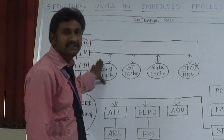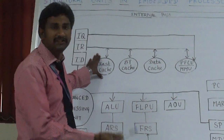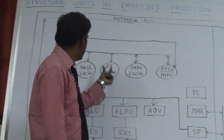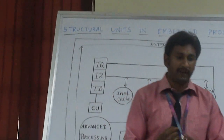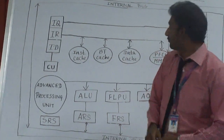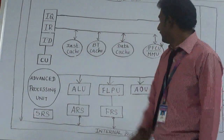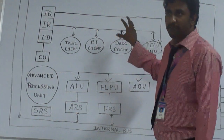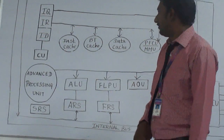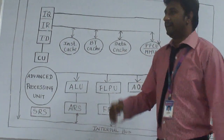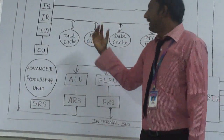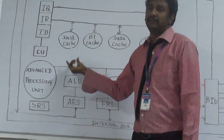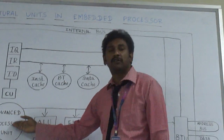The instruction cache pre-fetches instructions in advance and executes them in a first-in-first-out manner. The BD cache pre-fetches branch instructions — like branch, loop, call, or subroutines — that bunch of program instructions is pre-fetched and readily available in the BD cache. The data cache pre-fetches data in advance from external memory. The reason for all this is that the processor need not go to external memory every time to fetch data; instead it uses the readily available cache, so processing becomes much faster. That is the Advanced Processing Unit.